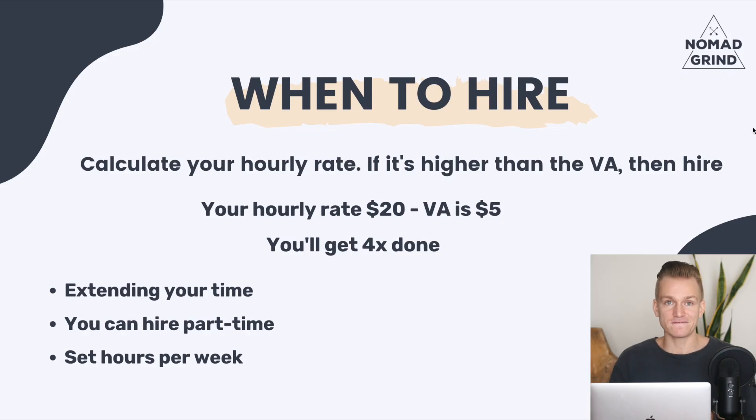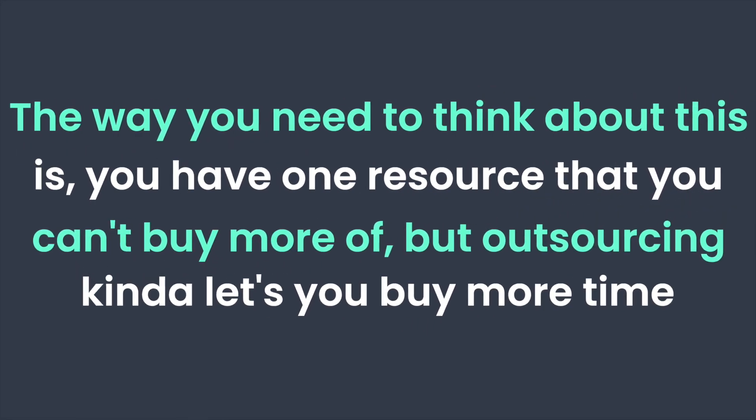A simple example: if your hourly rate is $20 and the virtual assistant you would hire charges $5 per hour, that means if you hire a virtual assistant you can get four times more done — instead of your one hour, they can work four hours. The way you need to think about this is you have one resource you can't really buy more of, which is your time. But outsourcing and hiring a virtual assistant lets you buy more time, because instead of you doing work for one hour, you pay someone at a lower rate and get more work done, saving a lot of time you can spend on other things.